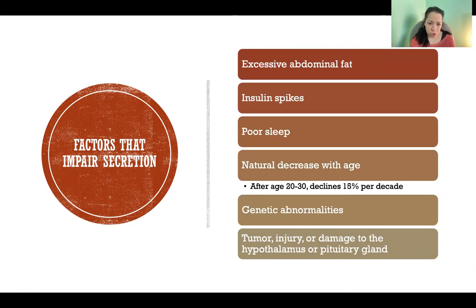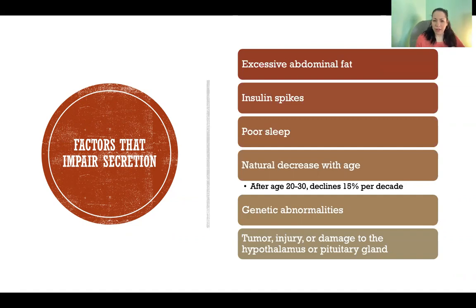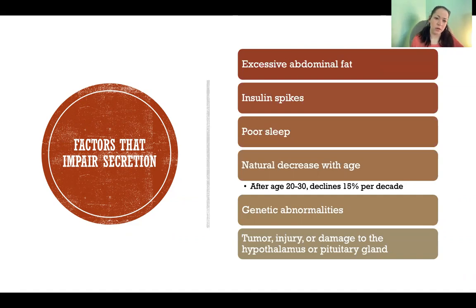Insulin secretion also interferes with growth hormone secretion — they have kind of opposite effects. Growth hormone is secreted more in times of low blood sugar and in a fasting state, so if we have insulin spikes in response to increased blood sugar, that is the opposite of what causes growth hormone secretion. The two are acting in opposition.